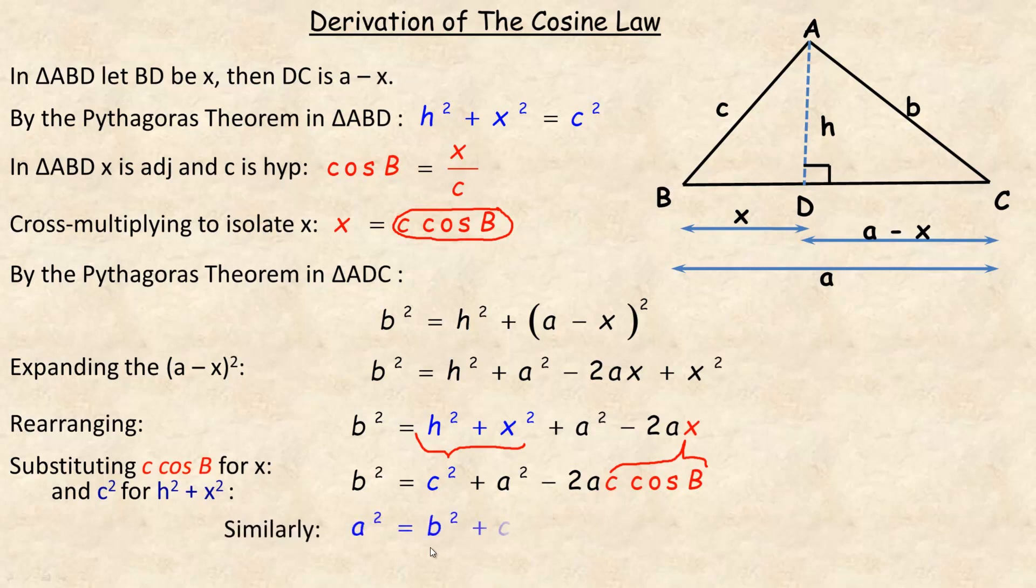Similarly, if I wanted to find side A, I would write A squared equals the other two sides squared, B squared plus C squared, minus 2BC. Notice that these are the same two sides as the ones that are squared here. And then the cos, this is multiplied. There's an implied multiplication here.